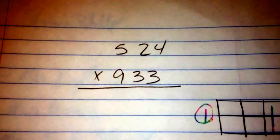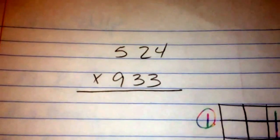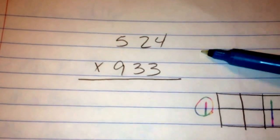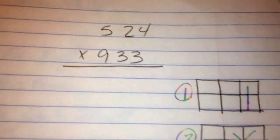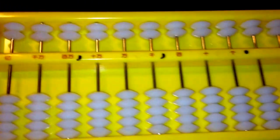Today, I'm going to show you how to multiply three-digit numbers using an abacus and the criss-cross method.